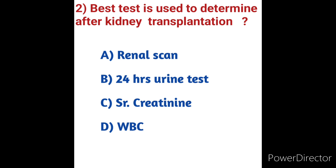Question number two: What is the best test used to determine if a transplanted kidney is working after kidney transplantation? Options: A) Renal scan, B) 24-hour urine test, C) Serum creatinine, D) WBC. The main test for kidney disease is a blood test that measures the level of creatinine — a waste product — in the blood. The best test used to determine kidney transplantation function is serum creatinine. Option C is the correct answer.